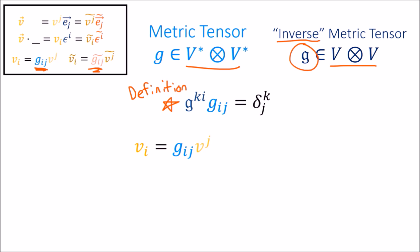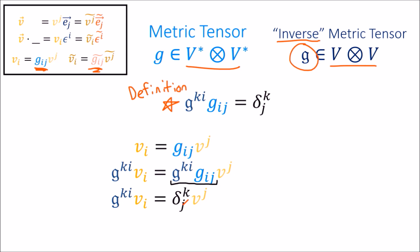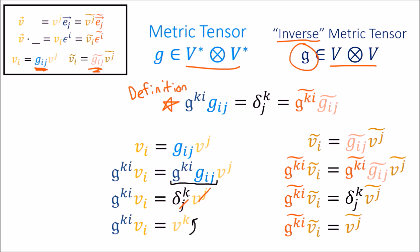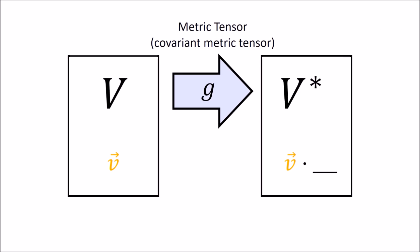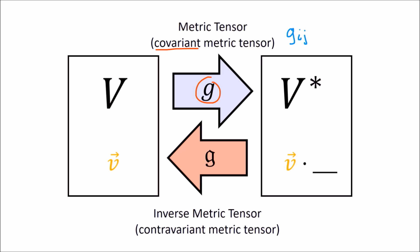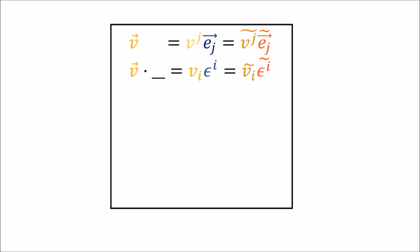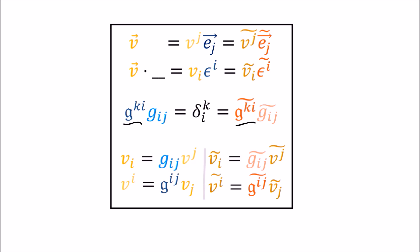If we take the standard index-lowering equation and multiply both sides by the inverse metric tensor, those terms cancel to give a Kronecker delta, and using the index cancellation rule we can raise the index back. So the ordinary metric tensor lowers indexes, while the inverse metric tensor raises indexes. Going from vectors to co-vectors, we use the ordinary (covariant) metric tensor. Going from co-vectors to vectors, we use the inverse (contravariant) metric tensor.